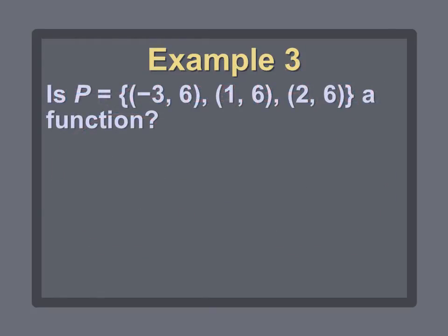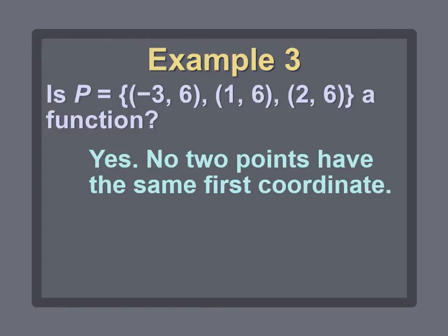Now relation P has ordered pairs (-3,6), (1,6), and (2,6). Is it a function? We only look at our X values. The first X is -3 — no other pair has -3. The next X is 1 — no other pair has 1. The last X is 2 — no other pair has 2. No two points have the same first coordinate, so relation P is a function.